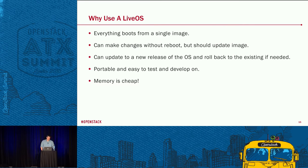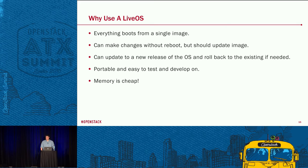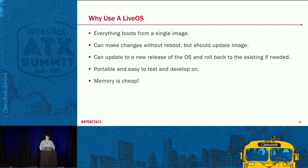Why use a live OS? Everything boots from a single image. You can make changes without a reboot but should update the image. Security updates can be rolled out to a live OS to avoid a reboot, or added to the next image. You can update to a new OS release and roll back if needed. It's portable and easy to test and develop on — you know exactly what's in the build, everything is version tracked, you can tag tickets to it. And memory is cheap nowadays: boxes are 128, 256 gigs and up, so running the filesystem in memory is really inexpensive.